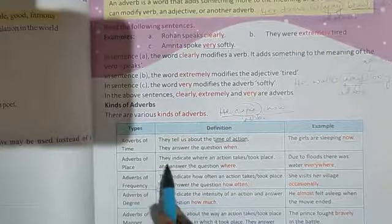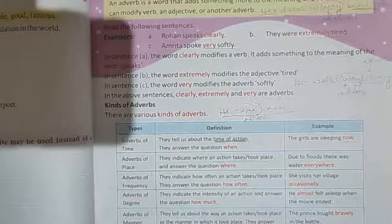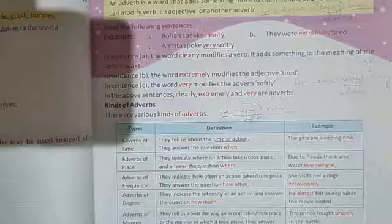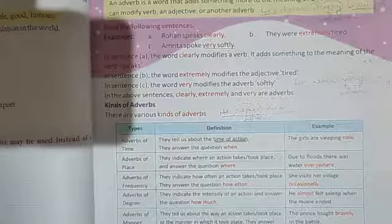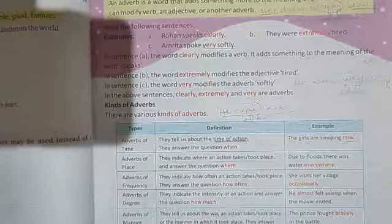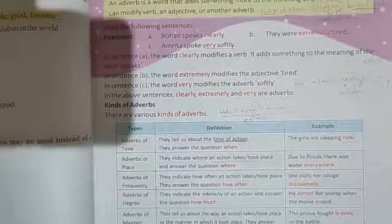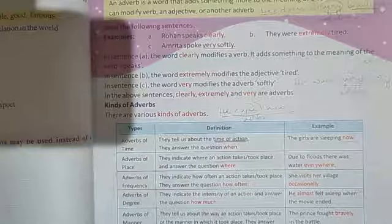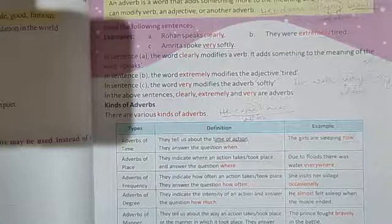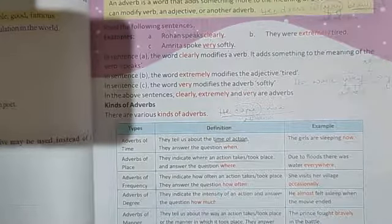Now, adverb of place. They indicate where the action takes or took place. Again, where the action takes place or took place. Where are you? Where did you find? Where did you find the pen? I found the pen everywhere. I found the pen everywhere. I cannot found. I did not found the pen anywhere. Everywhere. Anywhere. Somewhere. There. All these are your adverbs which talks about where an action takes place.